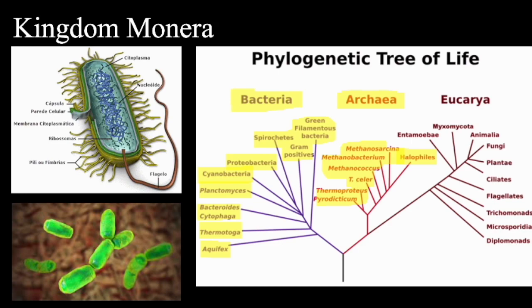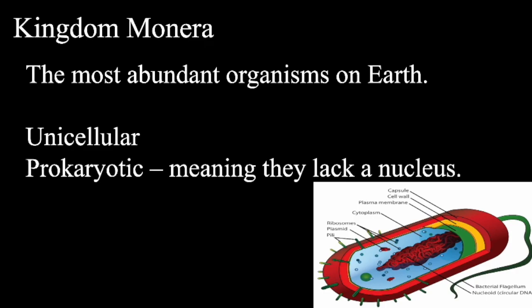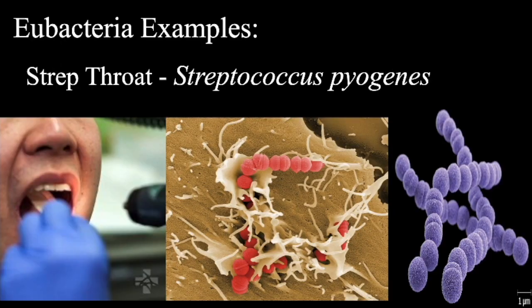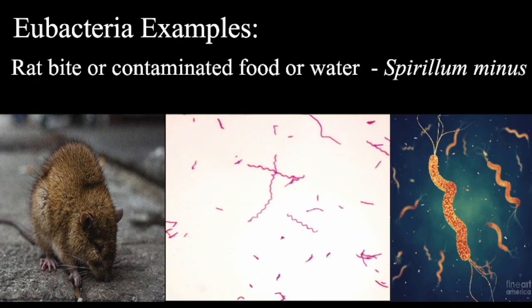Looking at Kingdom Monera — it's the most abundant organisms on Earth. These organisms are unicellular and prokaryotic, meaning they lack a nucleus, and there are two types. You have eubacteria, which often cause disease and are decomposers. So if you've had strep throat — Streptococcus pyogenes — food poisoning from Bacillus cereus, or been bitten by a rat or had contaminated food or water, you've had Spirillum minus.